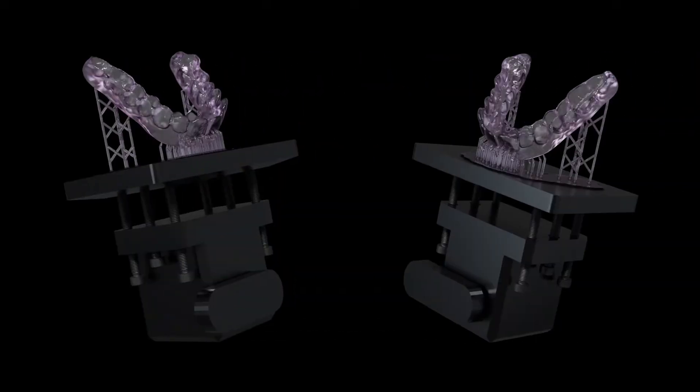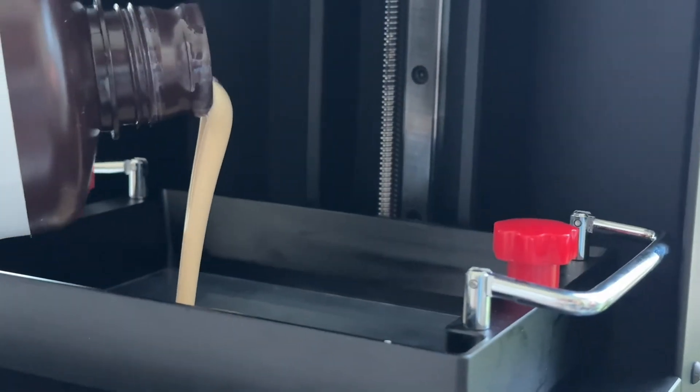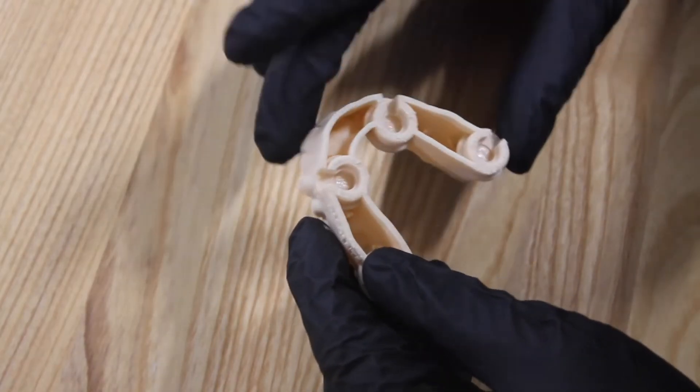Once the models are printed with your preferred 3D printing system, the next step is to glue the magnets inside the attachments. To do this, use a glue of your choice.